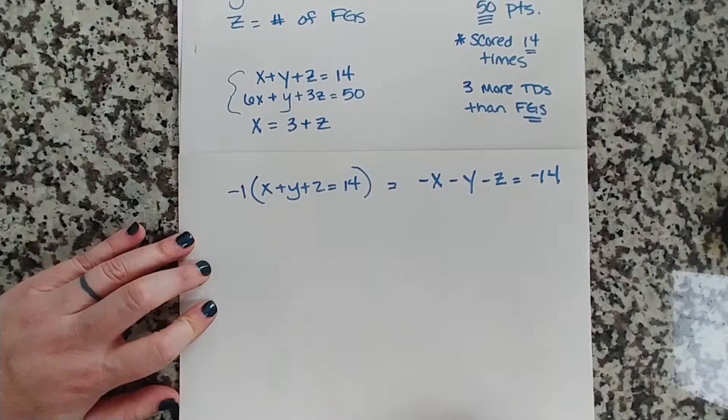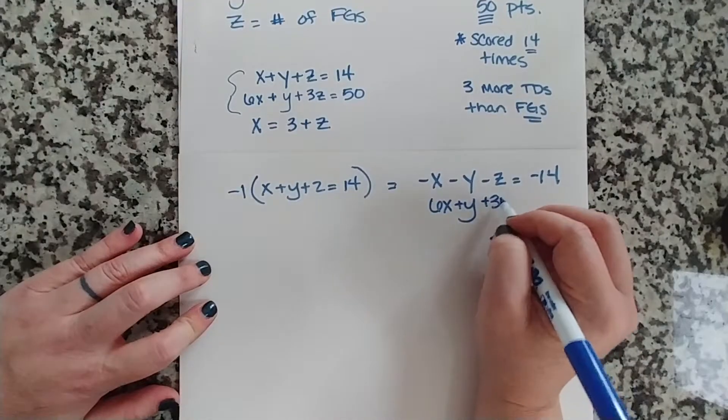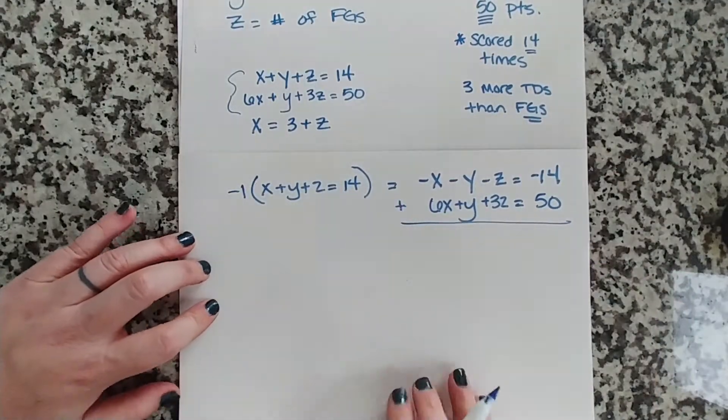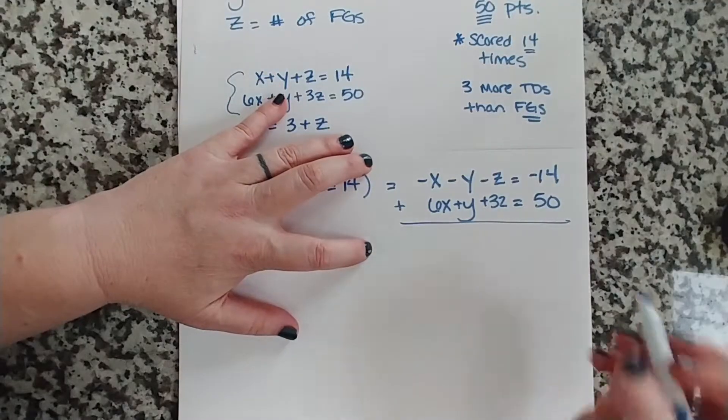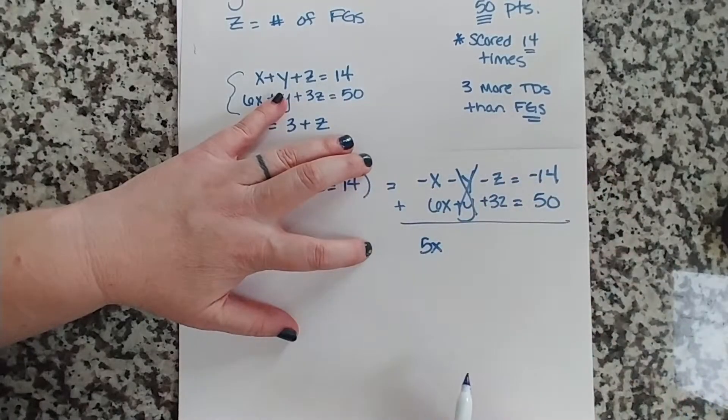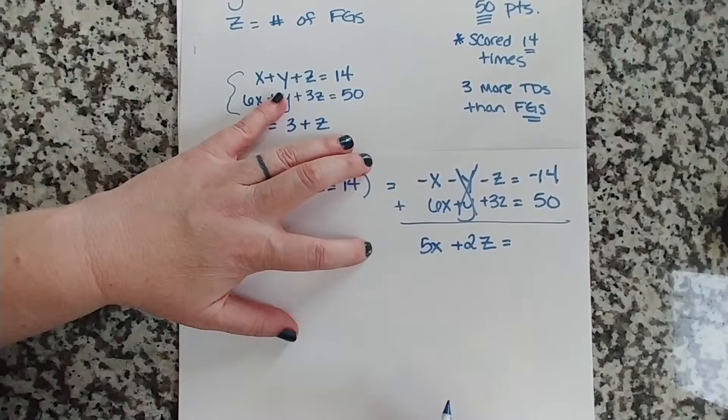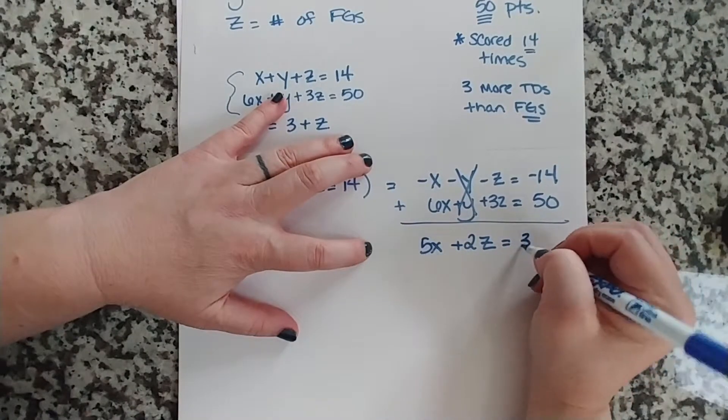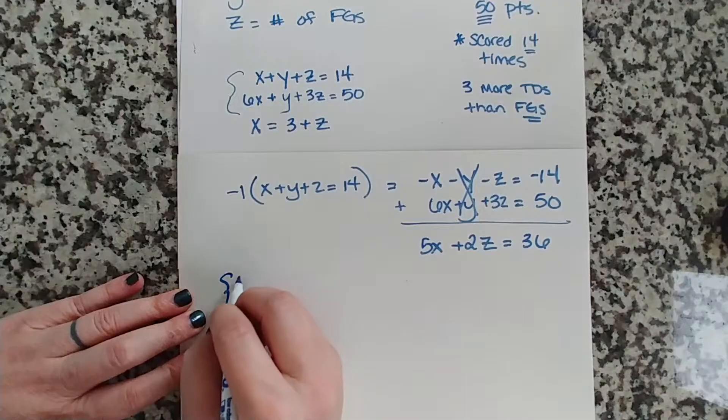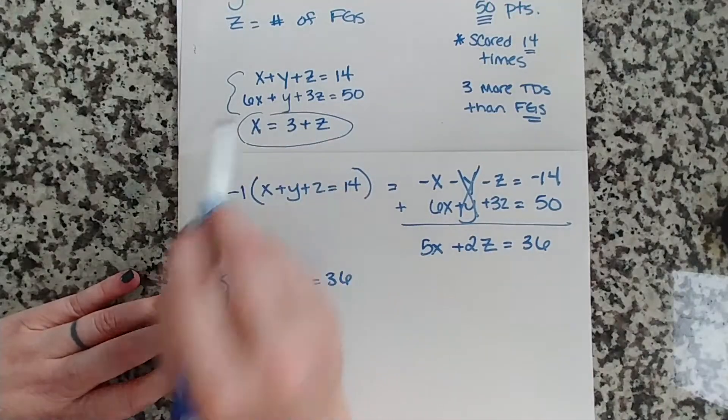Right? And then we are going to add the equation at the bottom, 6X plus Y plus 3Z equals 50. So what we're going to do is we're going to combine these two equations to make an equation that doesn't have a Y value. All right, so we have negative X, so negative 1 plus 6 is 5X. The Ys are going to cancel. You have negative 1 plus 1 is 0. You have 3Z minus 1Z, so plus 2Z equals 50 minus 14, so you're going to get 36. Okay? So this gives us one equation that has just an X and a Z: 5X plus 2Z equals 36.